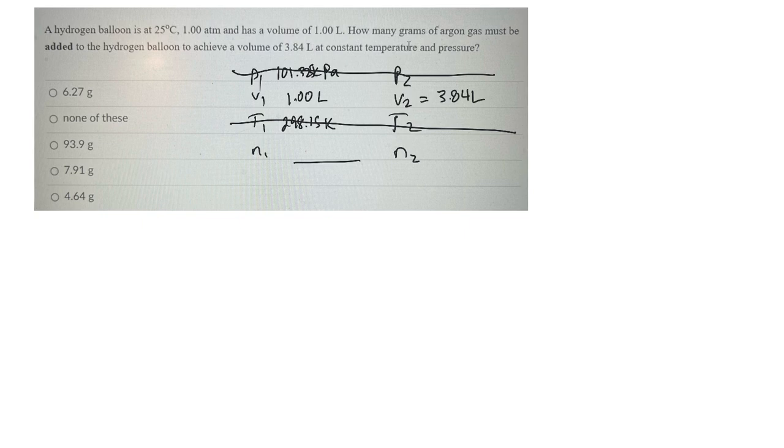So they want to know how many grams of argon gas must be added. Interesting. Well, let's just throw in a number. Let's say one mole of the gas. And I can use Avogadro's law to figure out how many moles I should end up with. Let's do that.